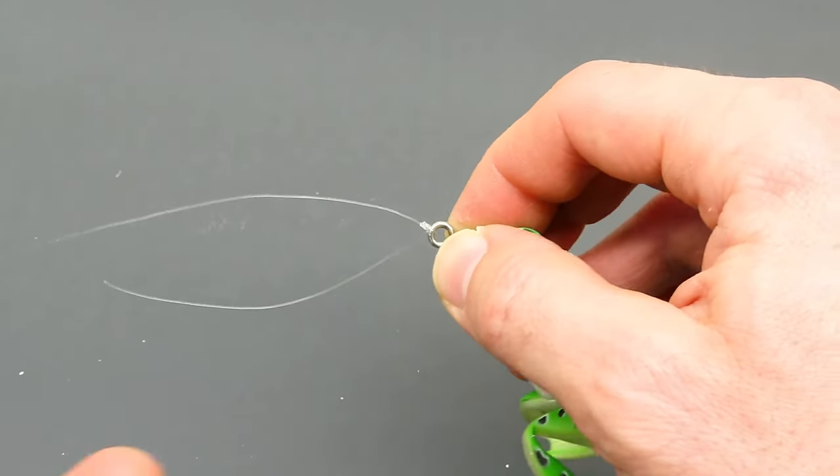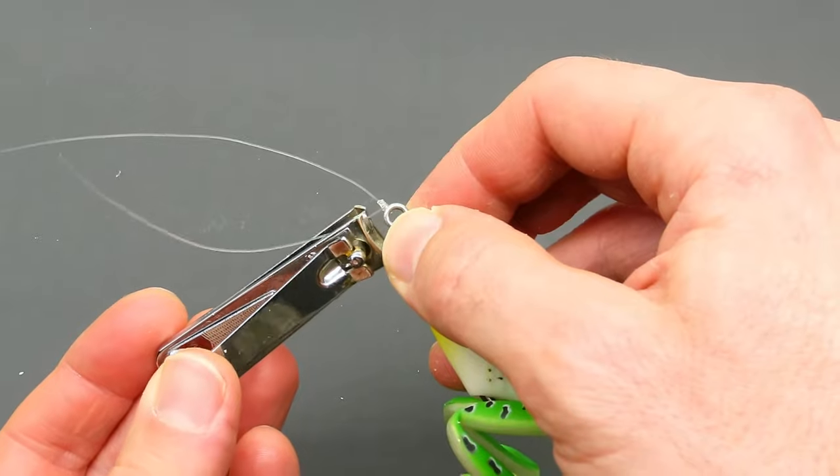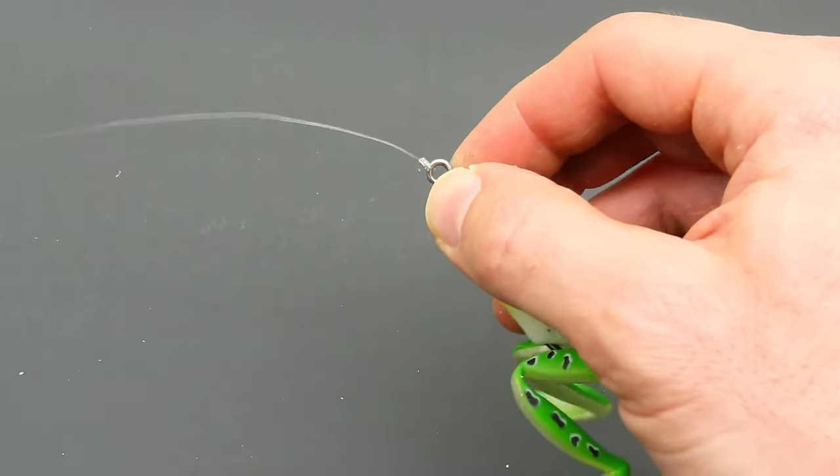Then you can cut off the tag end leaving about an eighth of an inch there. And that's it. That's the improved clinch knot.